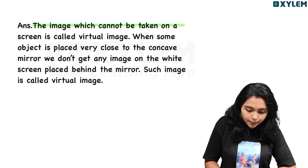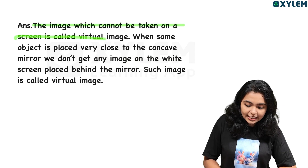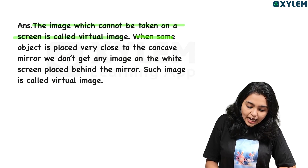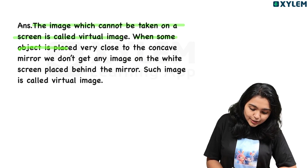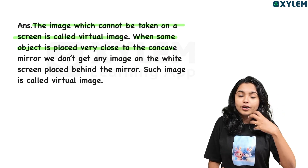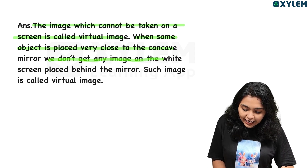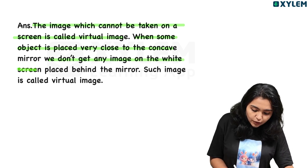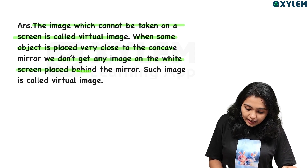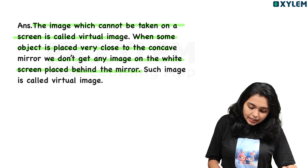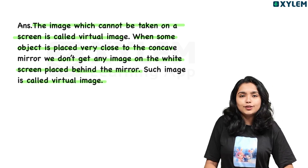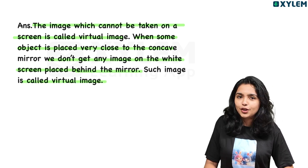The image which cannot be taken on a screen is called a virtual image. When an object is placed very close to a concave mirror, we don't get any image on the white screen behind the mirror. Such an image is called a virtual image.